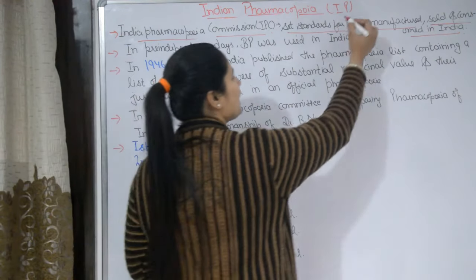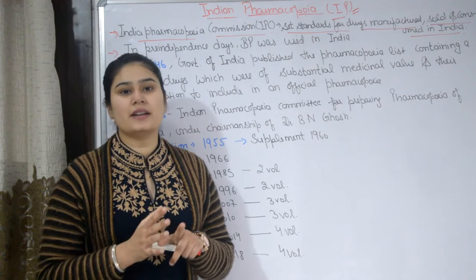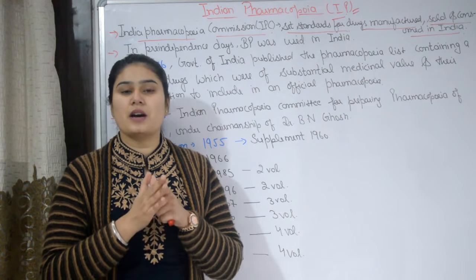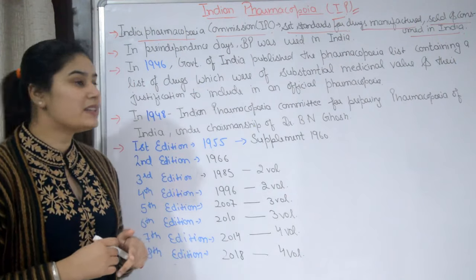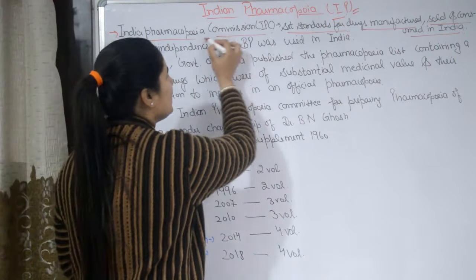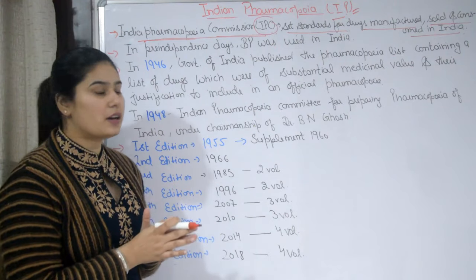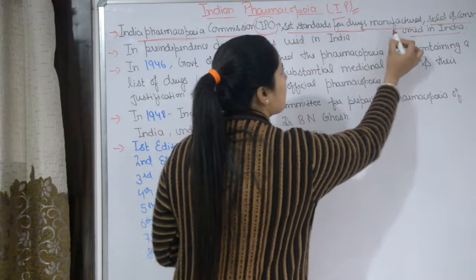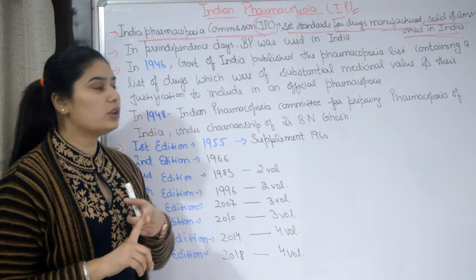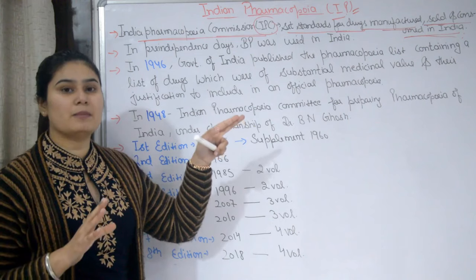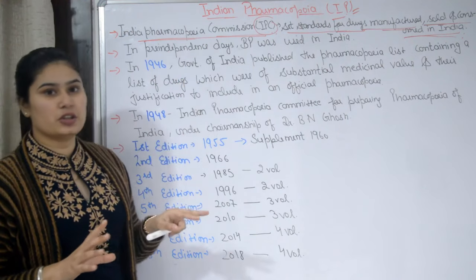Indian Pharmacopoeia, that is IP, is India's official book under the Indian government containing particular information on every drug. It is run by the India Pharmacopoeia Commission, that is IPC, which works under the Ministry of Health and Family Welfare. IPC sets standards for drugs manufactured, sold, and consumed in India.